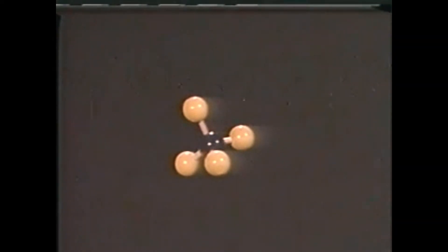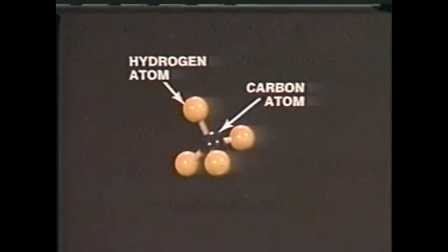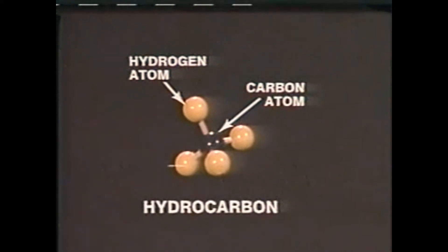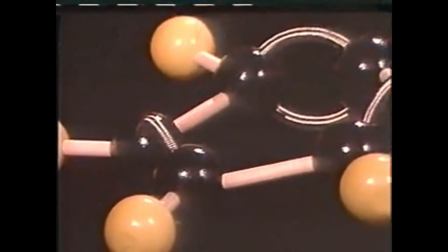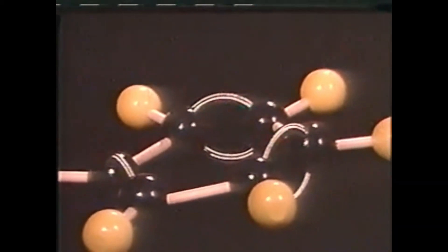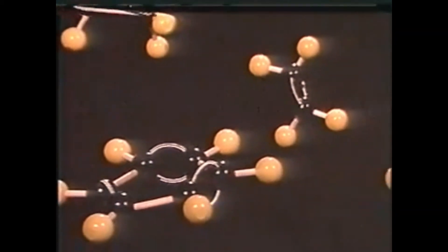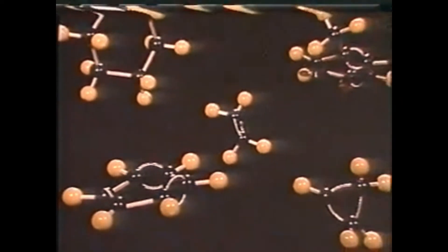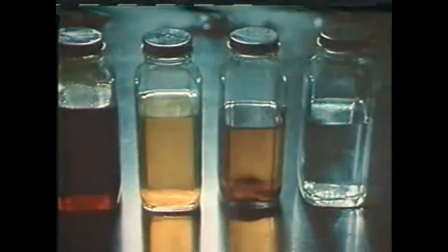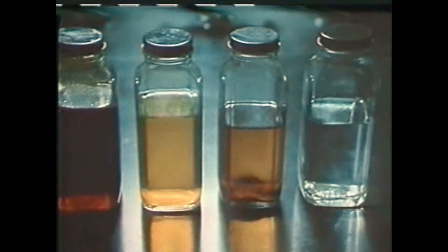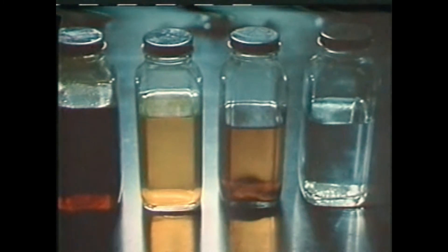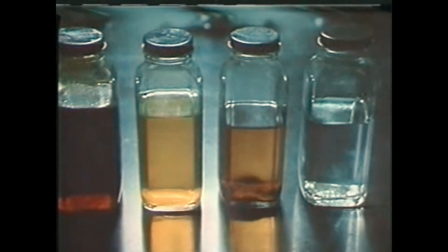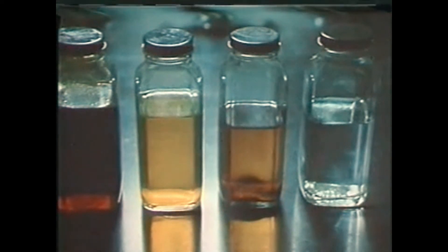Crude oil is composed of hydrogen and carbon atoms that have bonded together to form molecules called hydrocarbons. Hydrocarbons are formed in a variety of different shapes and sizes, ranging from small, simple molecules to large, complex compounds. The characteristics of a particular hydrocarbon, such as its boiling point, flash point, and color, are determined by the size and structure of the molecule. It is these characteristics that determine what types of products various hydrocarbons can be used in.